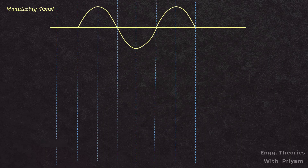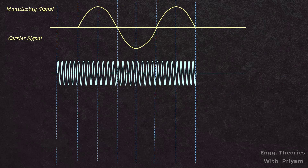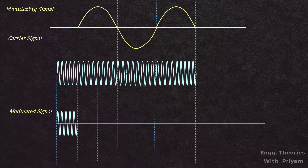In phase modulation, the instantaneous phase deviation is varied linearly with the modulating signal. The instantaneous angle is varied with respect to the modulating signal m(t). For a sinusoidal message signal, changes in phase are done with respect to frequency. When the amplitude of the modulating signal is equal to zero, the phase modulated signal is the same as the carrier signal.